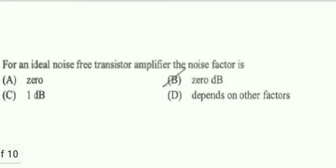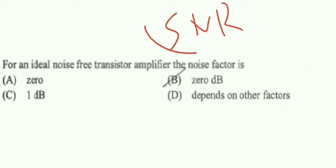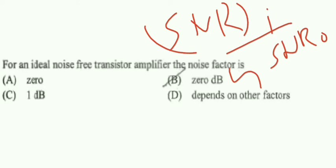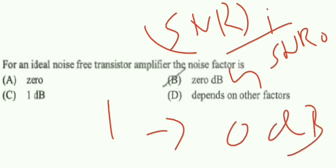For an ideal noise-free transistor amplifier, the noise factor is? We know noise factor is ratio of SNR i to SNR o, that is SNR at the input to the SNR at the output. For ideal transistor amplifier with no noise, it should have a noise factor of 0 dB, because noise factor is bothering about how much SNR is degrading. In ideal case, noise factor should be one because SNR i should be equal to SNR o. In dB it is zero dB. So option B is the right answer.